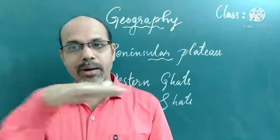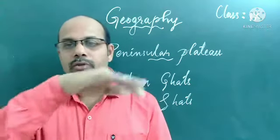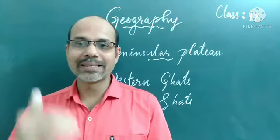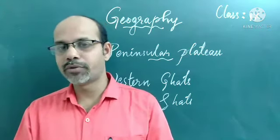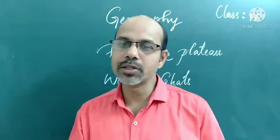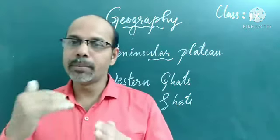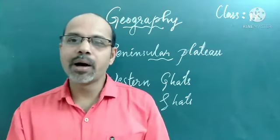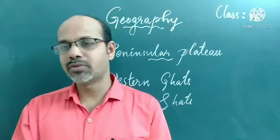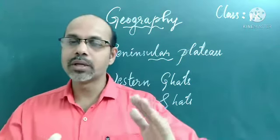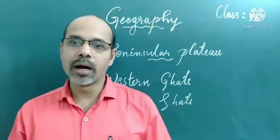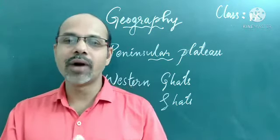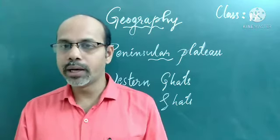Plateaus are also called table land because on the top this land is flat. It is composed of crystalline, igneous and metamorphic rocks — different types of rocks are found in this region. It was formed due to the breaking and drifting of the Gondwana land, making it part of the oldest landmass. We have studied in earlier classes how the Gondwana land was separated from Angara land and how the single supercontinent was divided into different continents.